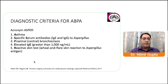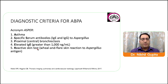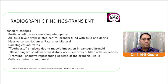The diagnostic criteria for ABPA can be remembered by the acronym ASPER: Asthma, Specific serum antibodies — IgE and IgG for aspergillus, Proximal bronchiectasis, Elevated IgE greater than 1000 nanograms per mL, and Reactive skin test to aspergillus antigen.